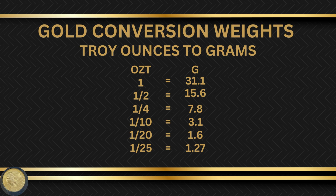Half a troy ounce equals 15.6 grams. A quarter troy ounce equals 7.8 grams. A one-tenth ounce equals 3.1 grams. A one-twentieth ounce equals 1.6 grams. And a one-twenty-fifth — a tiny little one-twenty-fifth — equals 1.27 grams.